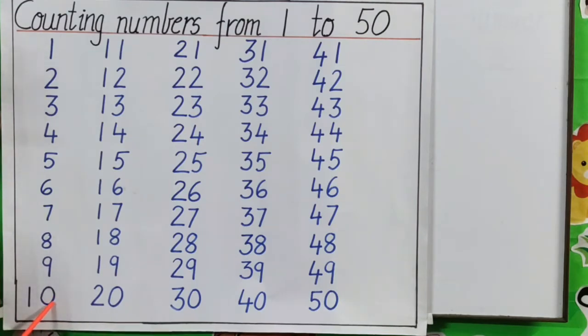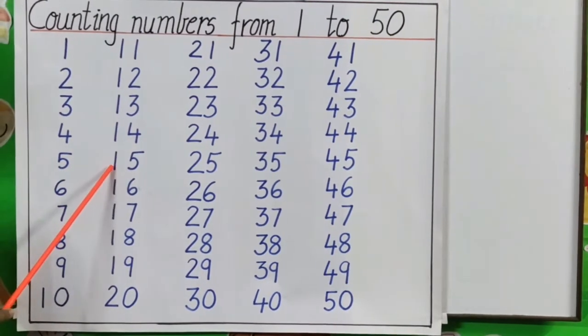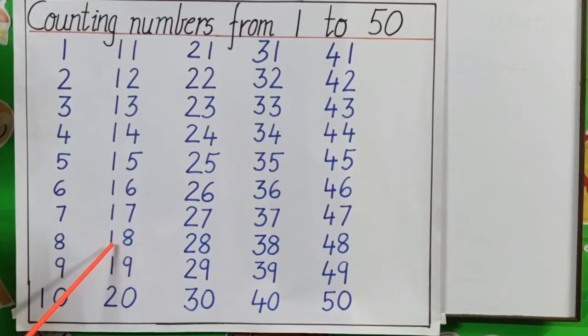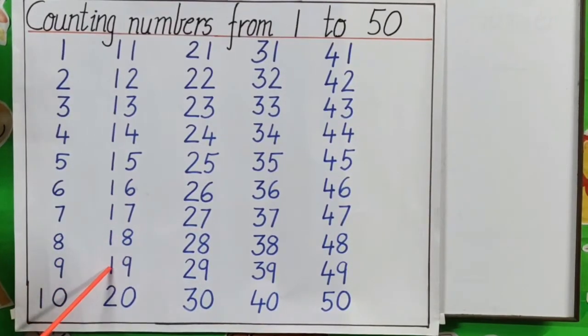So what is the next number? 11, 12, 13, 14, 15, 16, 17, 18, 19, 20. Again we can see 0 is below 9. Next number.